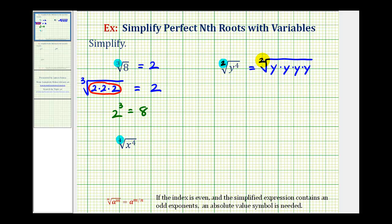And because the index is two, we're looking for groups of two equal factors because those would be the perfect square factors. So when simplifying, this simplifies to one factor of y and so does this. So the square root of y to the fourth is equal to y squared.